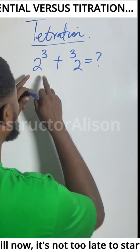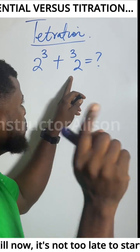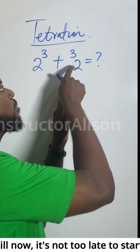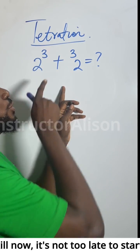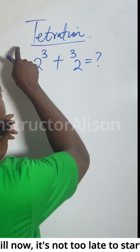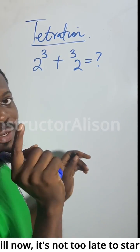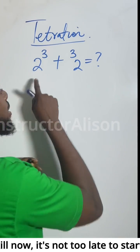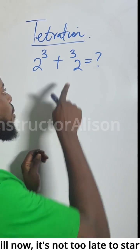Plenty of people know two to the power of three, but plenty will not know this particular one. Two tetration three — the name for this is an iterated exponent.